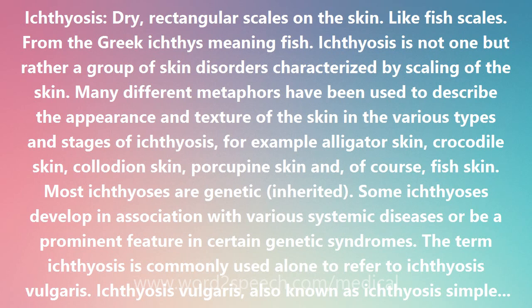Ichthyosis is not one but rather a group of skin disorders characterized by scaling of the skin. Many different metaphors have been used to describe the appearance and texture of the skin in the various types and stages of ichthyosis — for example, alligator skin, crocodile skin, collodion skin, porcupine skin, and of course fish skin. Most ichthyoses are genetic and inherited; some develop in association with various systemic diseases or as a prominent feature in certain genetic syndromes.